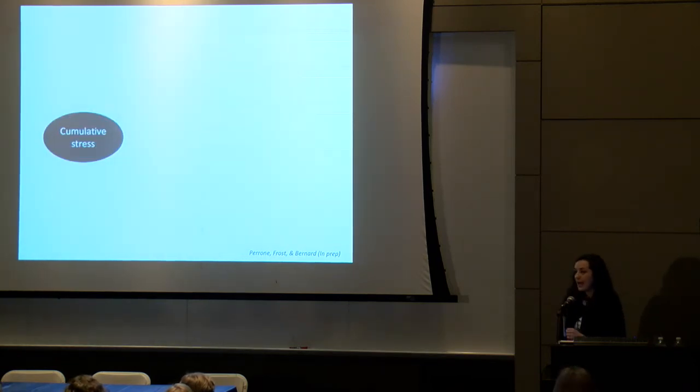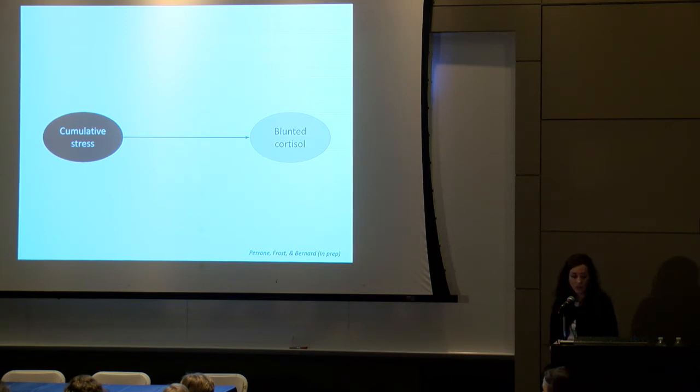What we found was that cumulative risk, again reflecting both high risk in the environment as well as low sensitivity in the parent-child interaction, was predictive of that blunted cortisol pattern from wake-up to bedtime. Children that were experiencing that accumulation of stress were more likely to show this down-regulation or blunting of their cortisol rhythm.